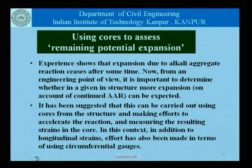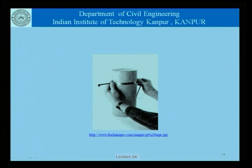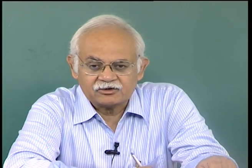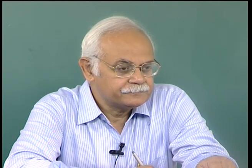In addition to the longitudinal strains, effort is also made to use circumferential gauges. So in addition to the longitudinal expansion of the core, effort is also made to measure changes in circumferential strain. This core taken from the structure is tested using accelerated tests with high sodium-potassium environment and increased temperature. This is a semi-destructive procedure for assessment of the extent of damage on account of alkali aggregate reactions in an existing structure.